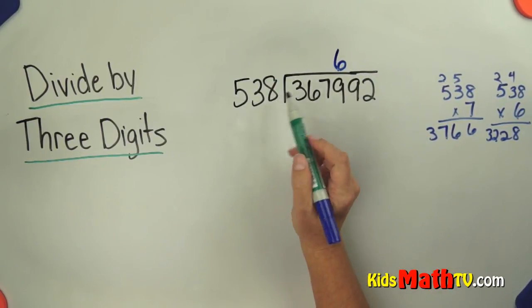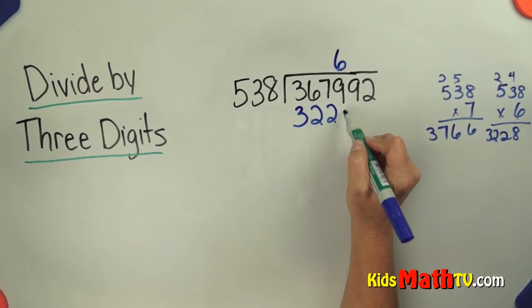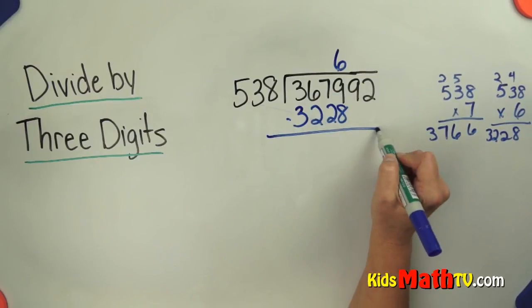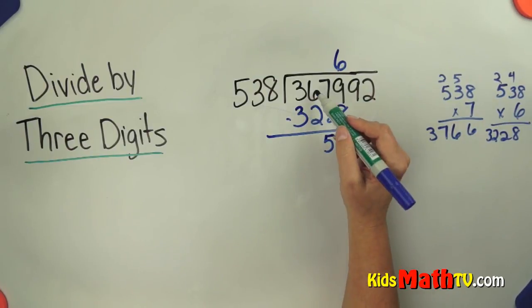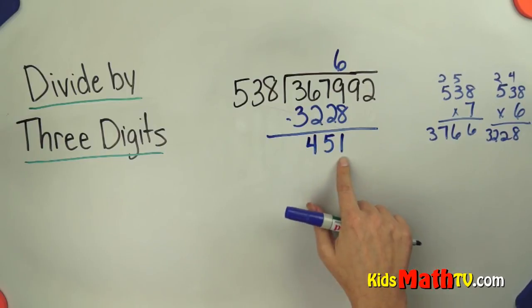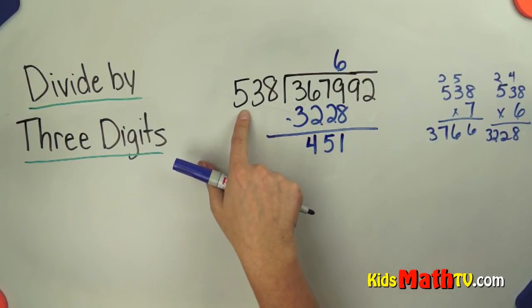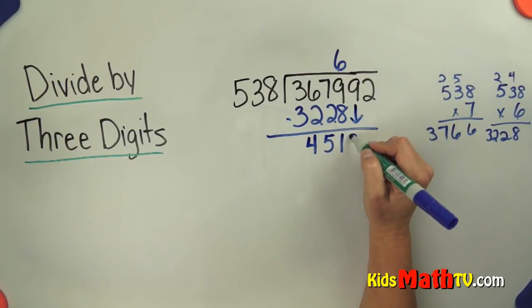So 6 times 538 is 3,228. Now I subtract, 9 minus 8 is 1, 7 minus 2 is 5, 6 minus 2 is 4. As long as what I get here is smaller than this, my remainder is smaller than my divisor, I'm fine. I have to bring down a 9 now.